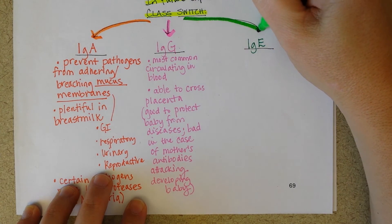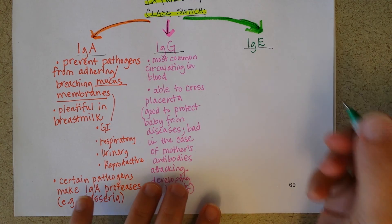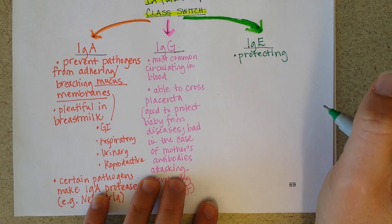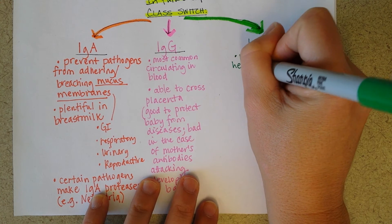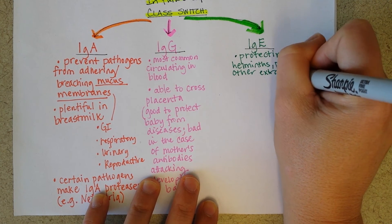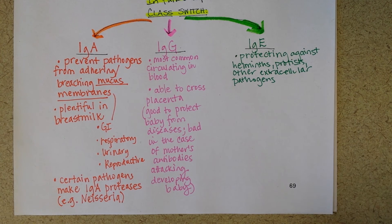Remember, the first time you're exposed to something, if the B cells are stimulated to make antibodies they're going to make IgM. This class switch comes along as the memory cells become more and more effective. We find that IgE antibodies tend to be found protecting against extracellular pathogens — and in fact they seem to be protecting against helminths and protists in particular, as opposed to IgG, which might be able to go after pathogens that are intracellular.